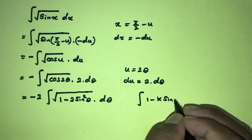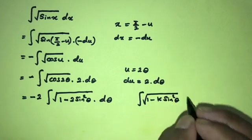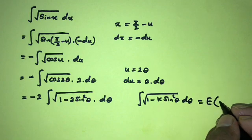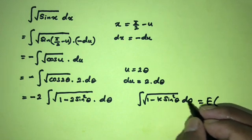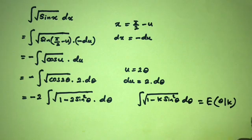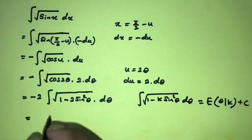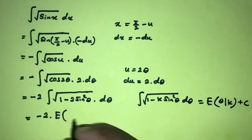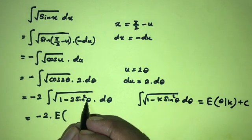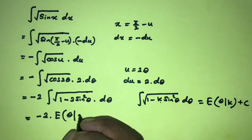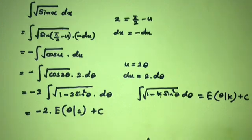The elliptic integral of 1 minus k times sine squared theta d-theta is equal to E(theta, k) plus C. So we can write here minus 2 times E(theta, k) plus C, where theta is the substitution variable.